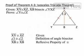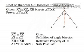The reflexive property of congruence allows us to state that segment XB is congruent to itself, segment XB. And now we can say that triangle XYB is congruent to triangle XZB because of the Side-Angle-Side postulate.